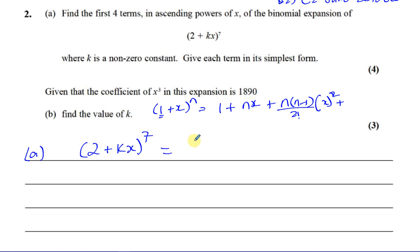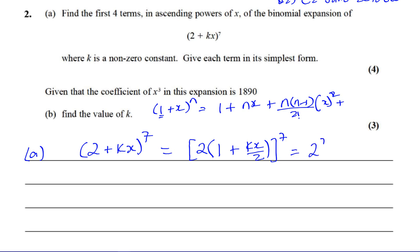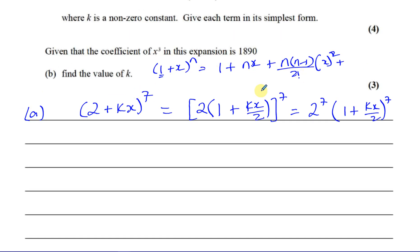With the method I use, I have to change this into a one. So I'll take two out of the bracket: two times one is two, and two times (kx/2) gives me kx. So I rewrite the expression as 2^7 times (1 + kx/2) to the power of seven, and then I can proceed to expand using the formula.